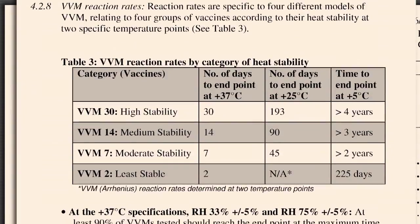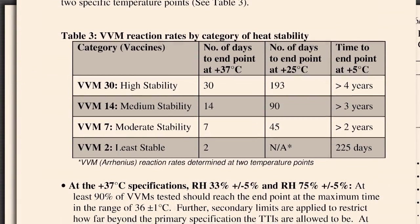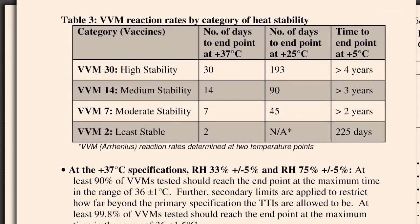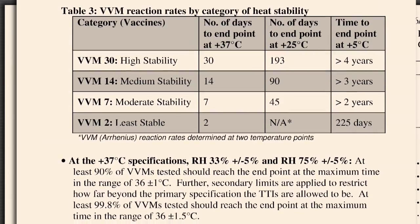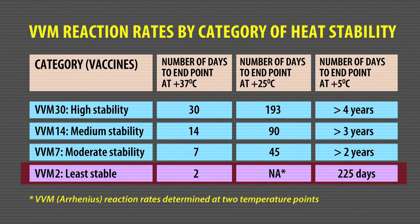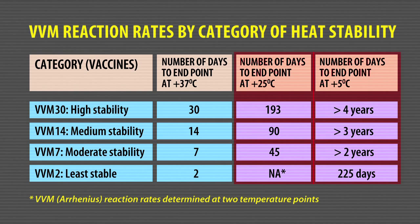This table here summarises different levels of stability characteristics of vaccines and types of VVMs that are assigned to them. VVM2 for the least heat stable vaccine reaches its end point in two days at 37 degrees. VVM7 reaches its end point in seven days at 37 degrees. And VVM14 in 14 days at 37. VVM30 for the most heat stable vaccines in 30 days at 37 degrees. On this same table, you can also see the various end points when the vaccine is exposed to 25 degrees as well as 5 degrees.